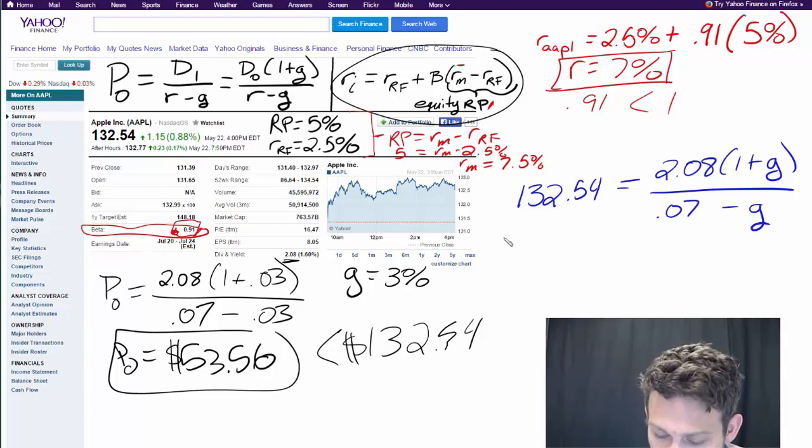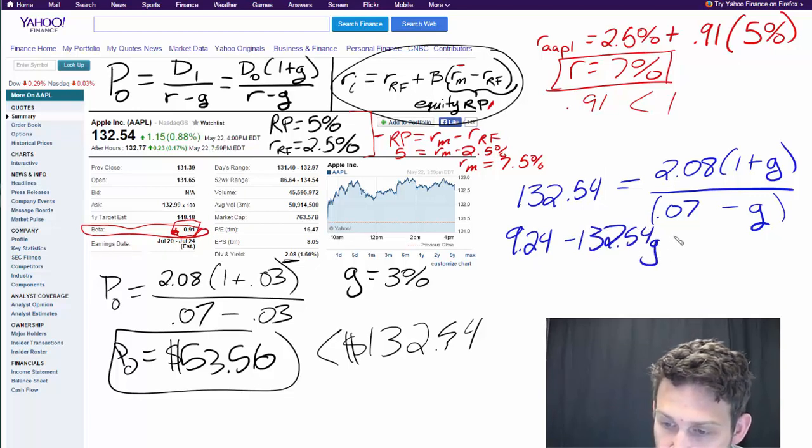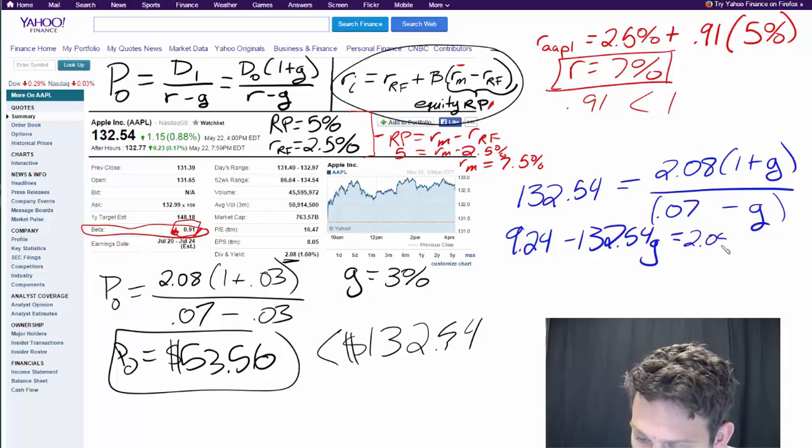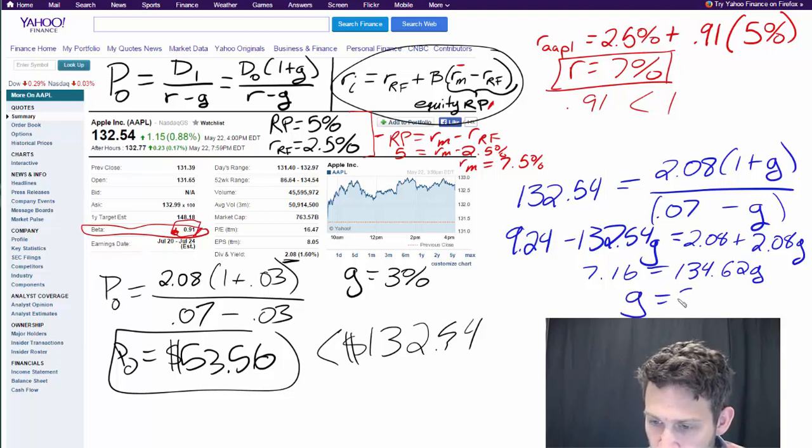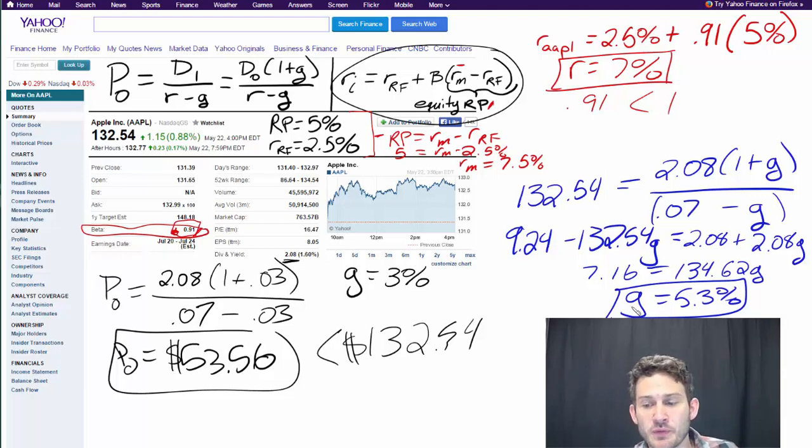We can solve this, move this around, multiply both sides by 0.07 minus G, and then multiply this through. That comes up with 9.24 minus 132.54G equals 2.08 plus 2.08G. We're going to add 132.54 to both sides, subtract 2.08 from both sides, and we'll have 7.16 equals 134.62G. Divide both sides by 134.62, so G equals 5.3%. The market generally thinks that Apple is going to grow at 5.3%.